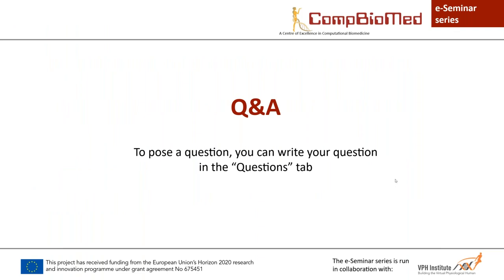Thank you very much, Adria. Just a quick reminder for the audience: if you have any questions, please write them in the Questions tab so I can read them out. Whilst we wait for those questions, I actually have a couple myself. My first question is on the amount of training data used in obtaining your coarse-grained models. We've seen with AlphaFold that their system was trained on something like 170,000 protein structures. You mentioned the CATH dataset containing about 12,000 protein domains — does all of that data go into the model or is it just some carefully selected subset?